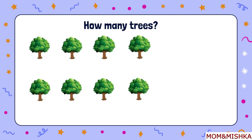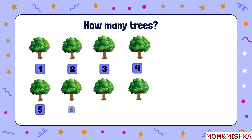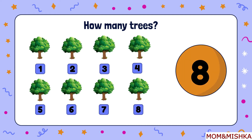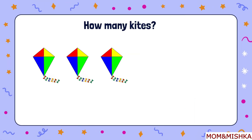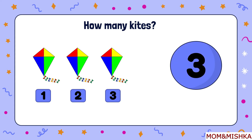Next question — how many trees? Let's count together: one, two, three, four, five, six, seven, eight. There are total eight trees. How many kites? One, two, three. There are total three kites.